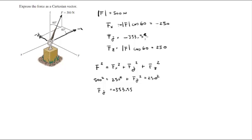So the Cartesian vector form of this vector comes out to be negative 250i minus 353.55j plus 250k. Final answer.